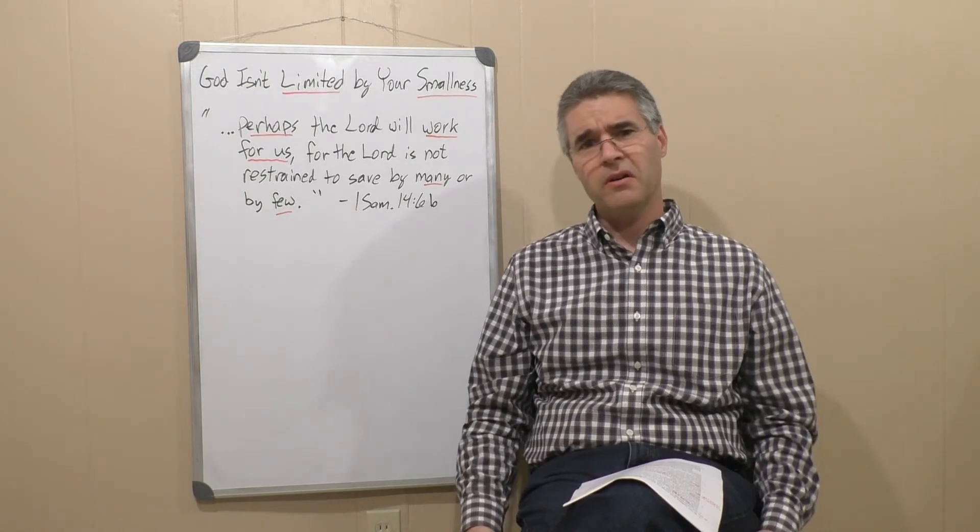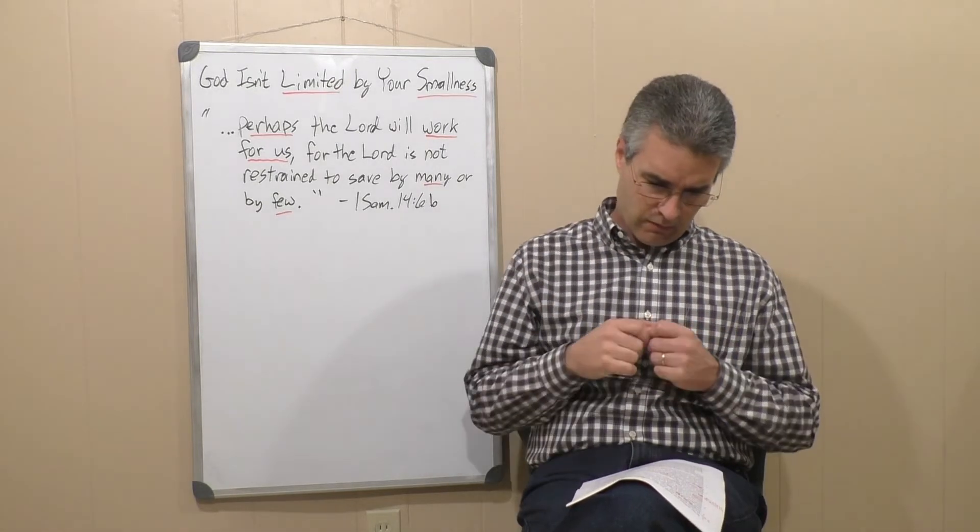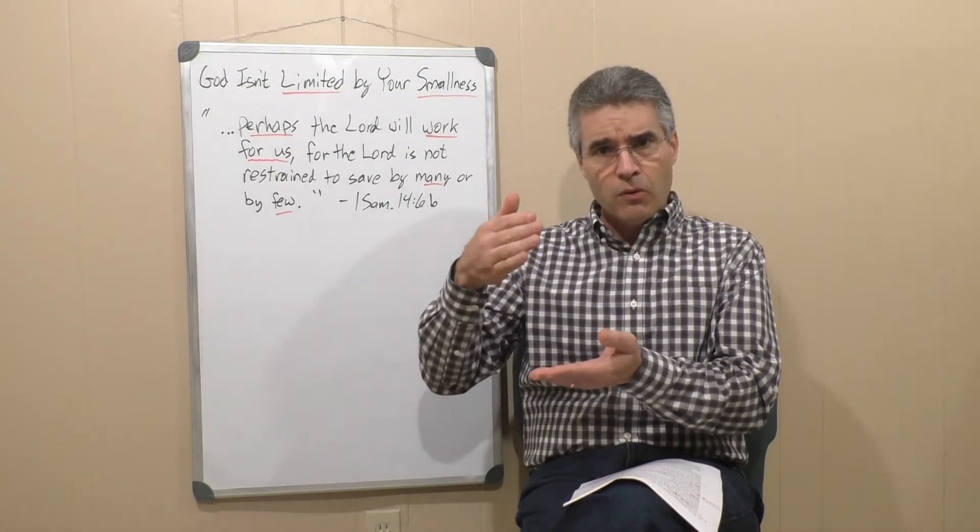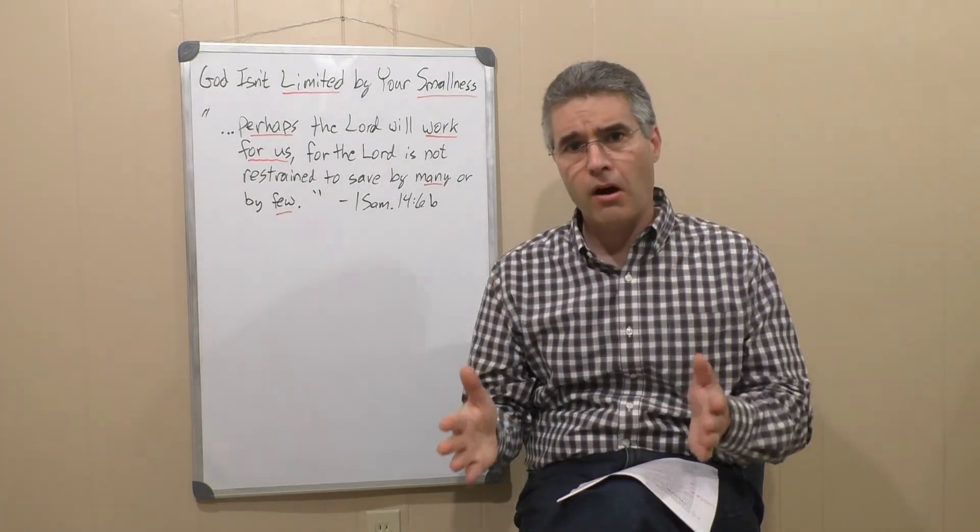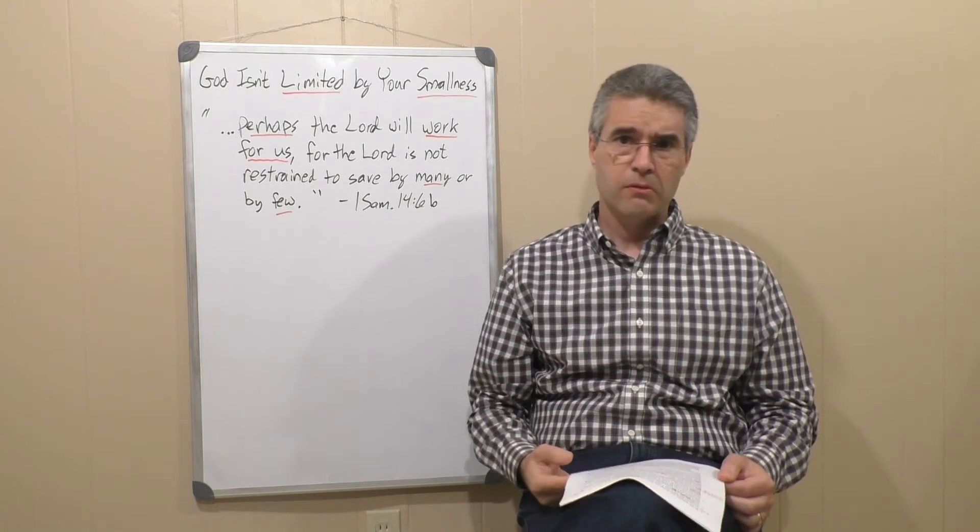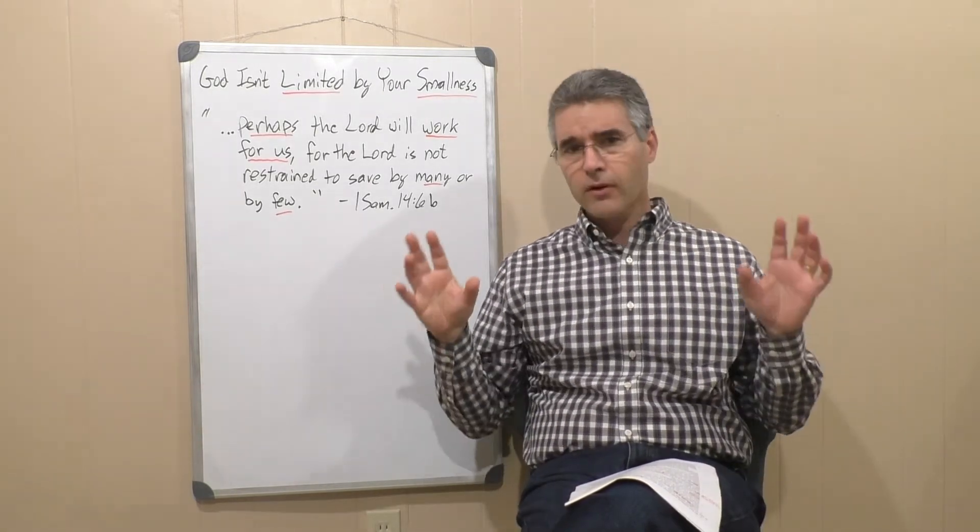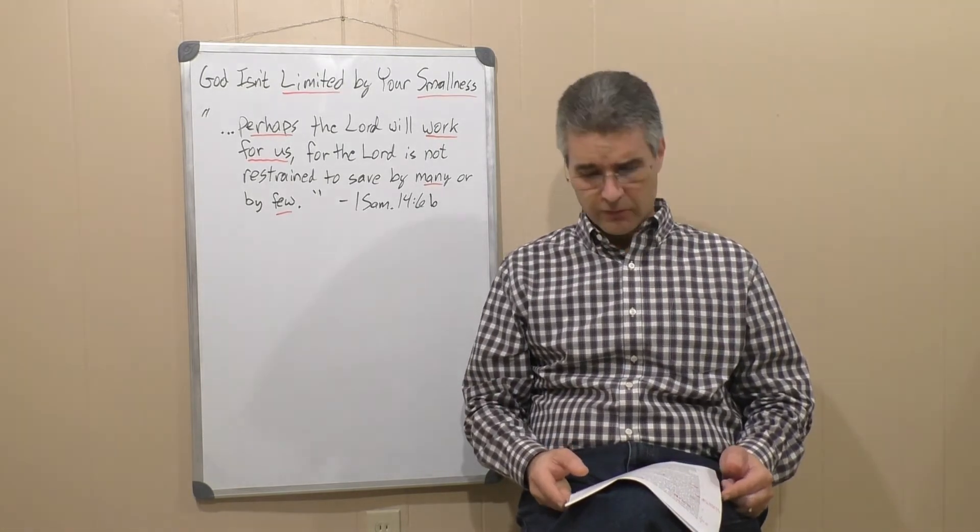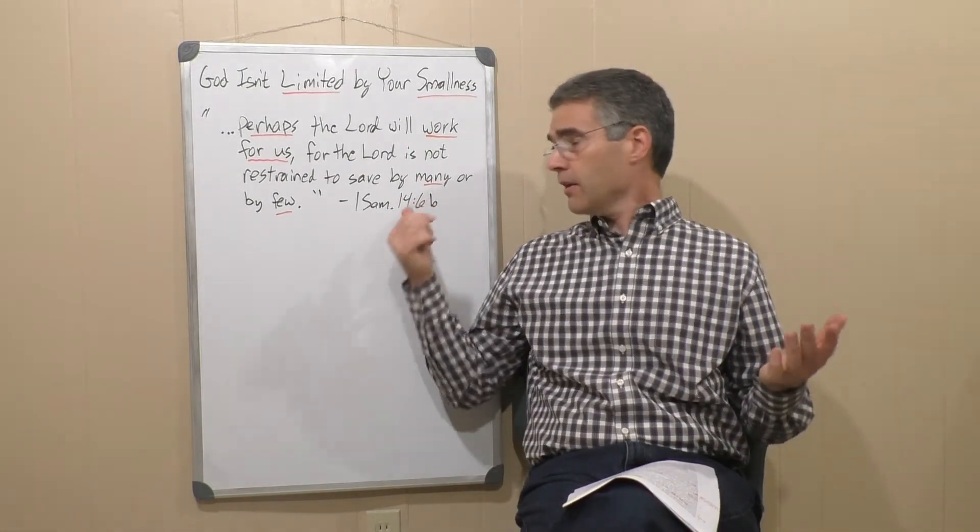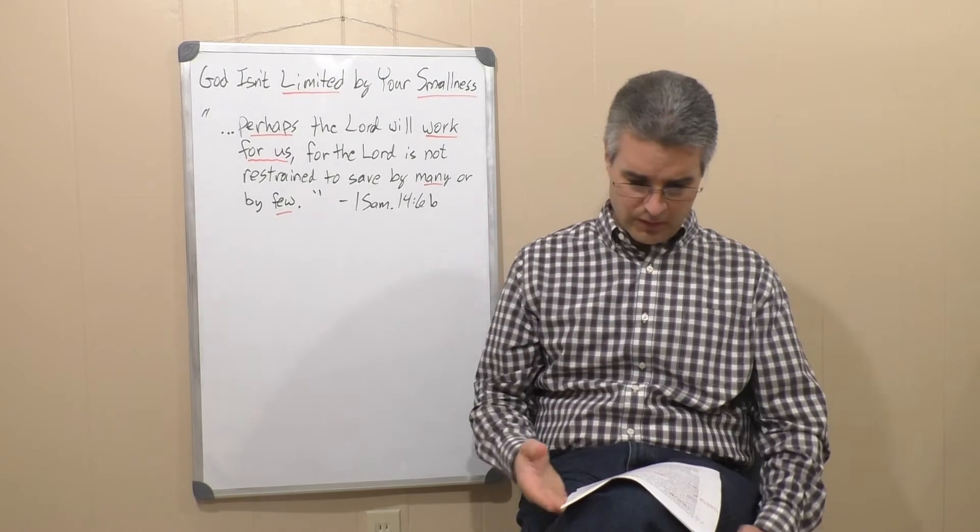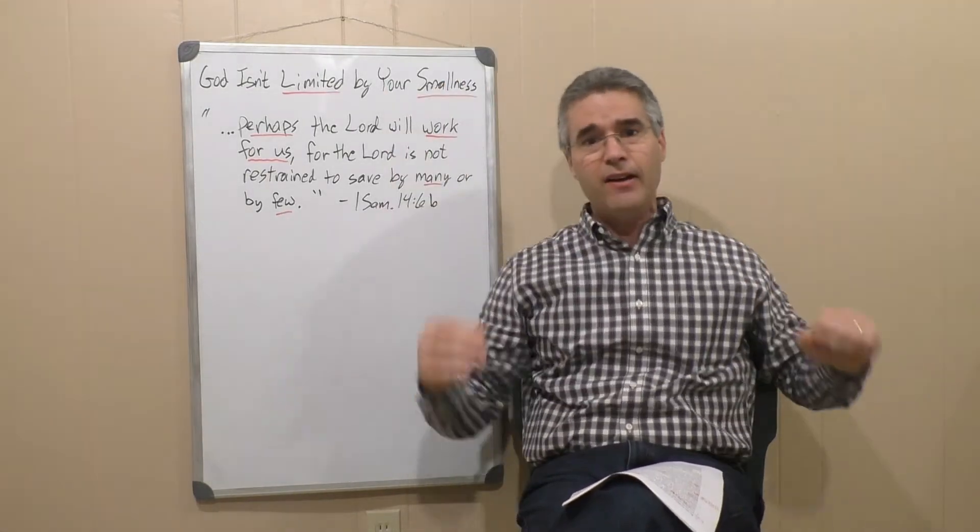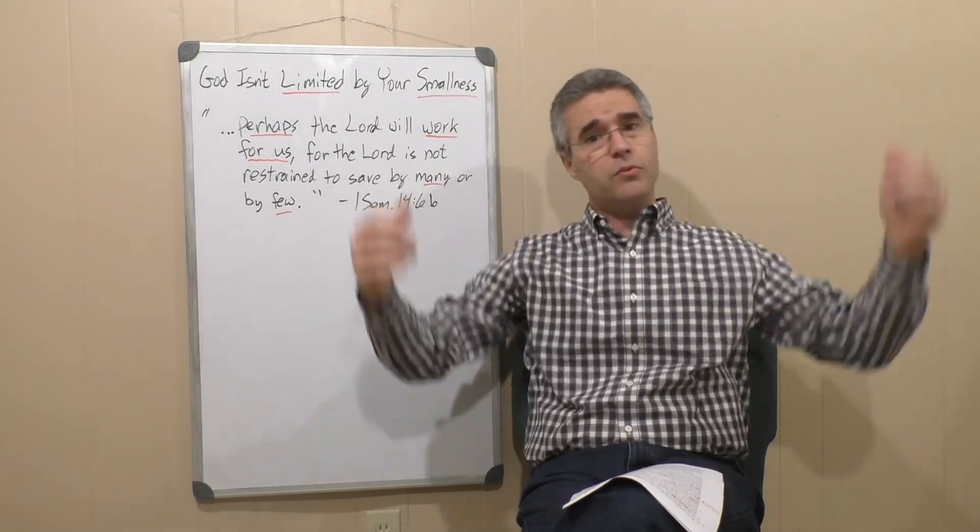Listen, brethren, this is something we need to learn. Any calculation we make in which the conclusion is that God cannot do something or God will not do something merely because the numbers aren't big enough. That conclusion is false. It's false. Now, that calculation might work for everything else. It might work for everything else, but it does not apply when you're talking about working with the almighty God. He's not restrained to save by many or by few. It's just irrelevant when we can confirm like Jonathan did in the story that this is truly God leading us, that we can climb up that hill in confidence that he's going to be with us when we face whatever is up there at the top.